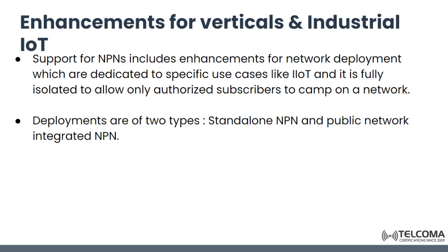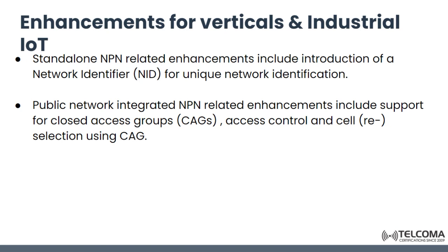The architectural model considers the 5G system as a bridge for integration with a TSN operating network. Support for NPNs includes enhancements for network deployments dedicated to specific use cases like IoT, and it is fully isolated to allow only authorized subscribers to camp on a network. There are two types of deployments: standalone NPN and public-network-integrated NPN. Standalone NPN enhancements include introduction of a network identifier for unique network identification, while public-network-integrated NPN enhancements include support for closed access groups, CGS access control, and cell selection using CGS.